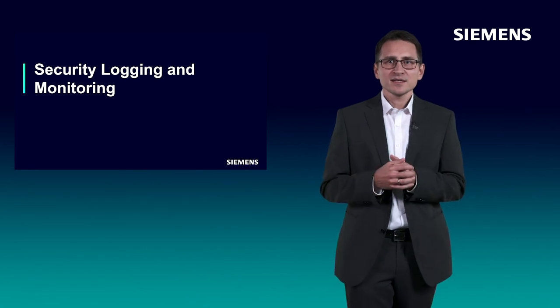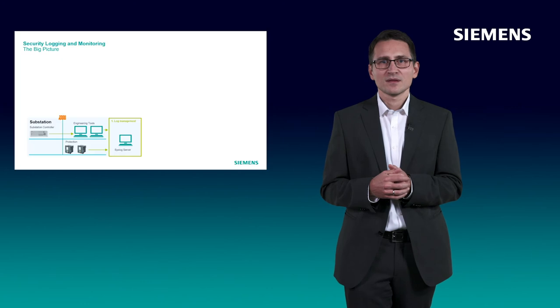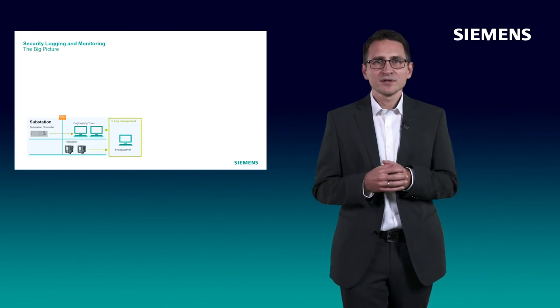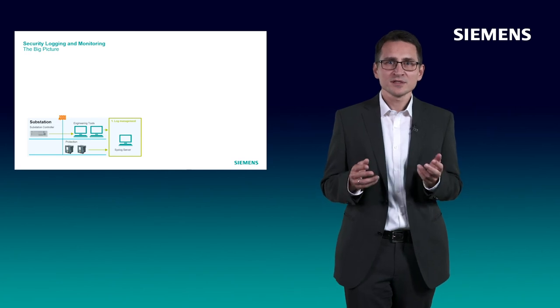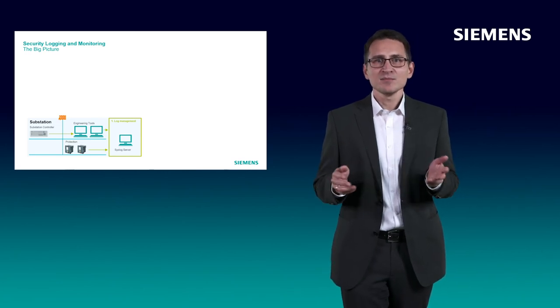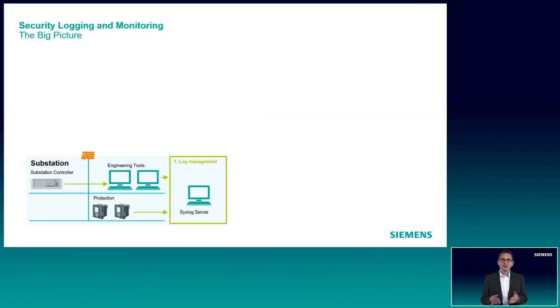Let's move on to the last topic, security logging and monitoring. Logging and monitoring is important to get an overview about the security posture of a system and to detect any malicious activity in the energy automation network. This includes, amongst others, the monitoring of the role-based access control solution and the usage of digital certificates.